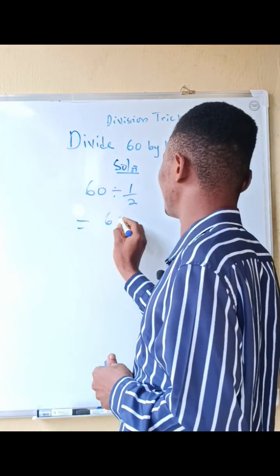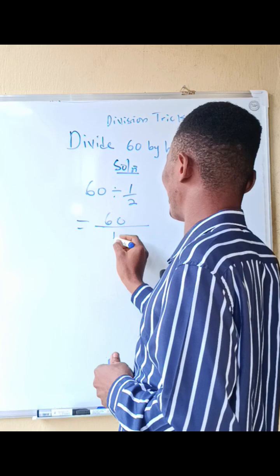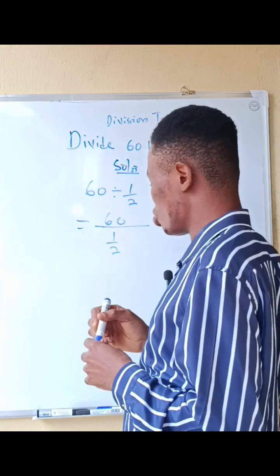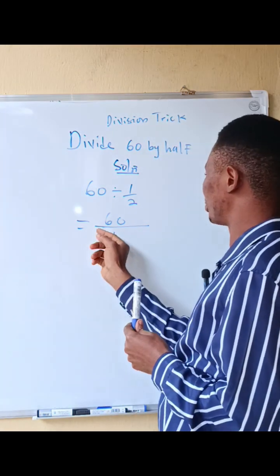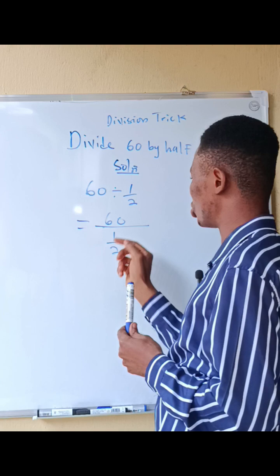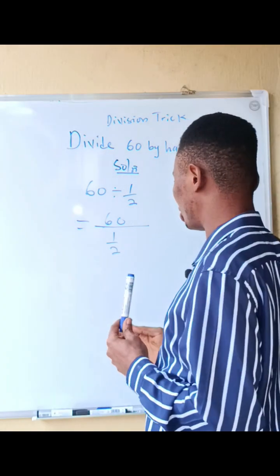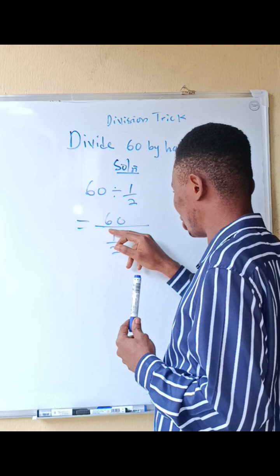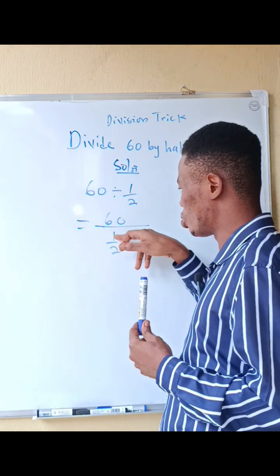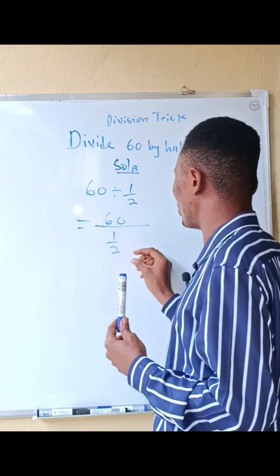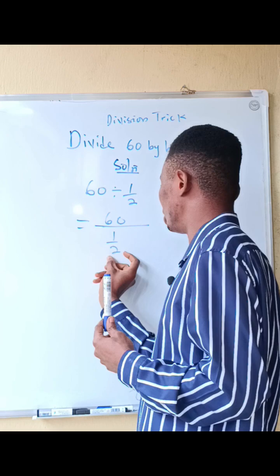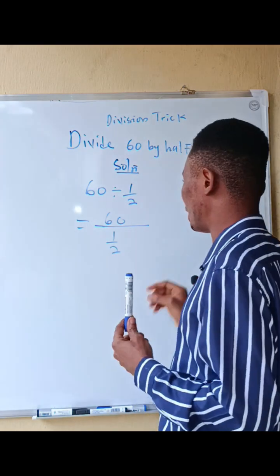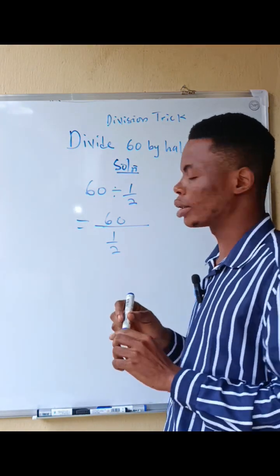as 60 divided by 1 over 2. So here we are going to change from division sign to multiplication. When you are doing that, the numerator of this fraction is going to turn to the denominator, while the denominator is going to turn to the numerator, and I multiply with 60.